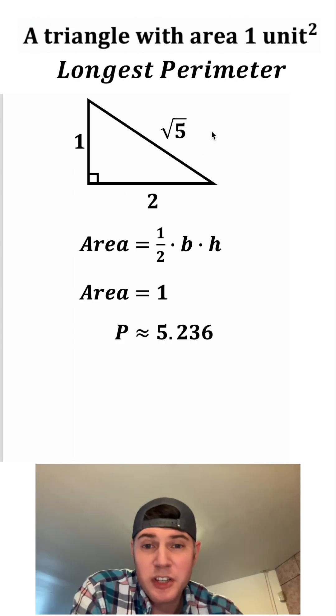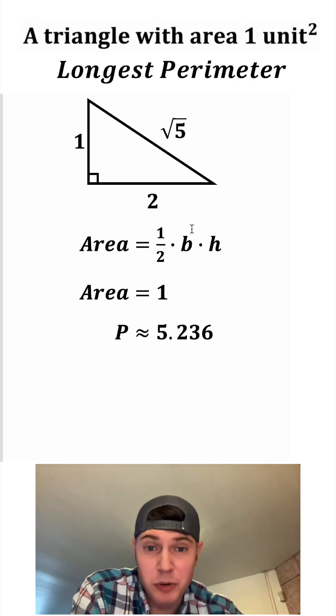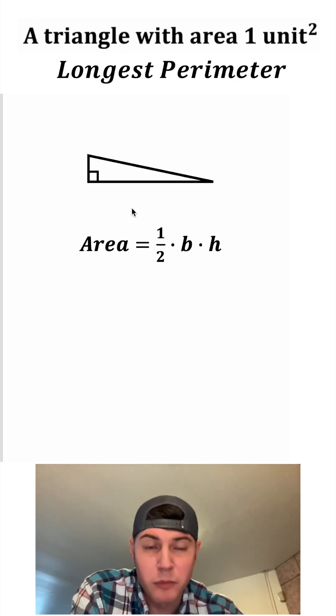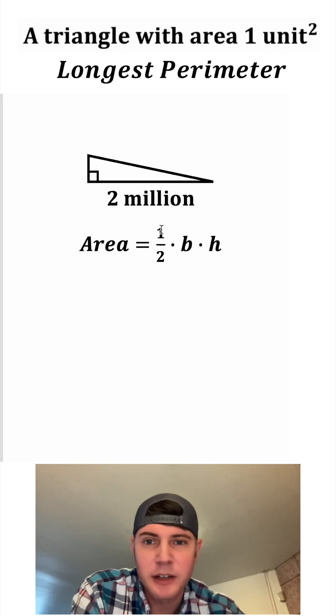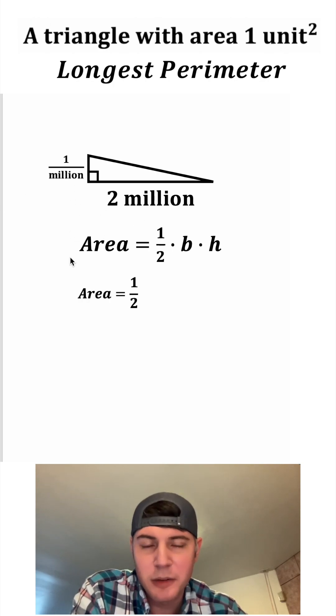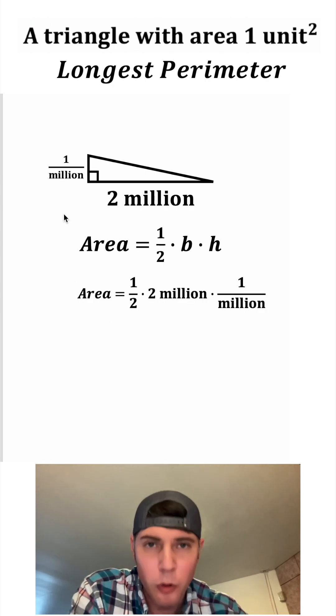So we know that's one possible length, but we're trying to figure out the longest perimeter we can get. So let's make this bottom really large, something like two million. And then the height in this case would have to be one over a million. So the area is gonna be one half times the base of two million times the height of one over a million.